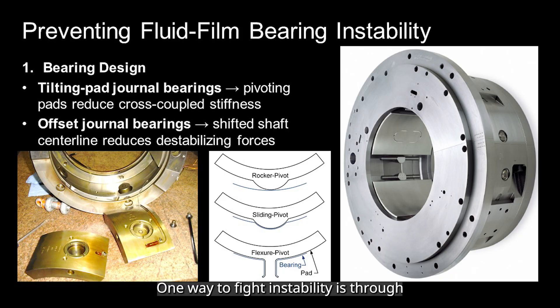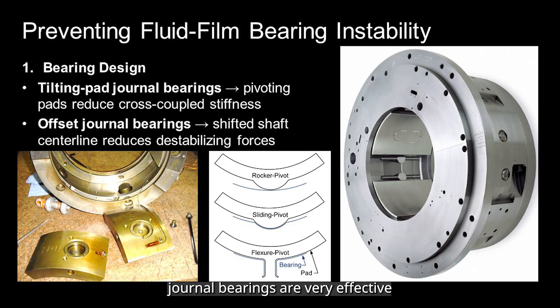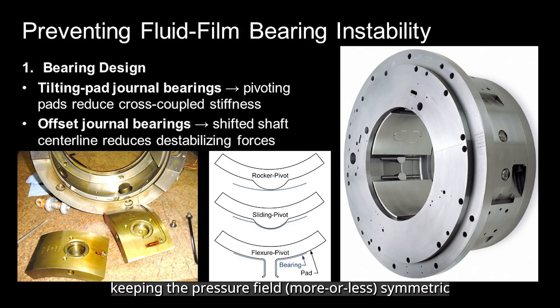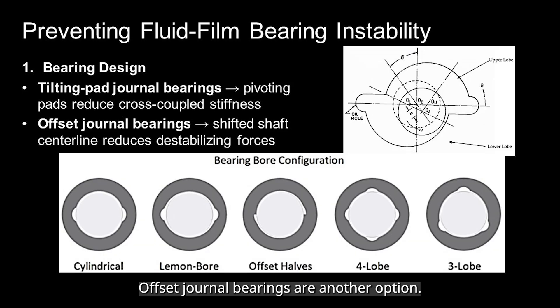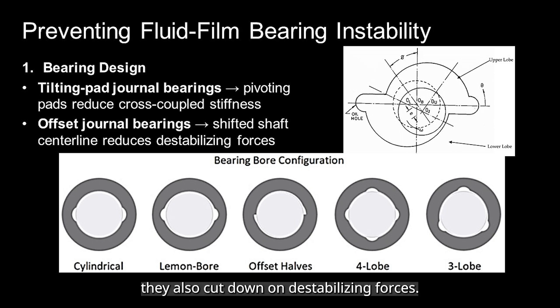One way to fight instability is through bearing design. Tilting pad journal bearings are very effective because their pads pivot, keeping the pressure field symmetric and reducing cross-coupled stiffness. Offset journal bearings are another option — by shifting the shaft centerline, they also cut down on destabilizing forces. These designs make the bearing itself more stable.